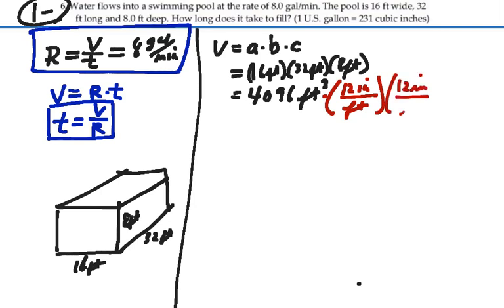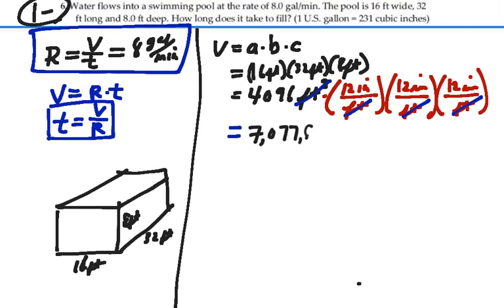By doing that, I get rid of feet cubed and I'm going to end up with cubic inches. So 4,096 times 12 cubed is 7,077,888 cubic inches.